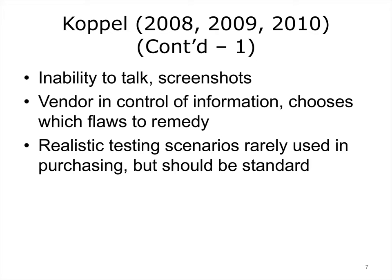Vendor contracts prohibiting communication about their products means vendors may be in control of information, and vendors choose which flaws to remedy. Realistic testing scenarios are rarely used, but should be standard.